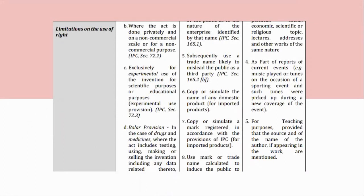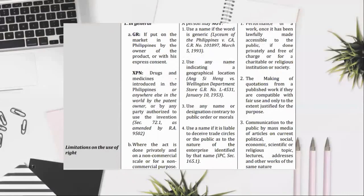(6) Copy or simulate the name of any domestic product, for imported products. (7) Copy or simulate a mark registered in accordance with the provisions of IPC, for imported products. (8) Use a mark or trade name calculated to induce the public. Copyright limitations: (1) performance of a work, once it has been lawfully made accessible to the public, if done privately and free of charge or for a charitable or religious institution or society; (2) the making of quotations from a published work if they are compatible with fair use and only to the extent justified for the purpose.